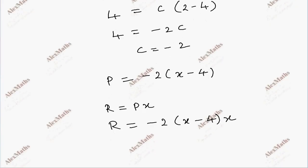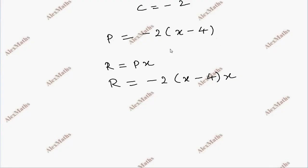Expanding this, R equals minus 2 times (x minus 4) times x, which equals minus 2x squared plus 8x. So the revenue function is R equals 8x minus 2x squared. That's our answer.